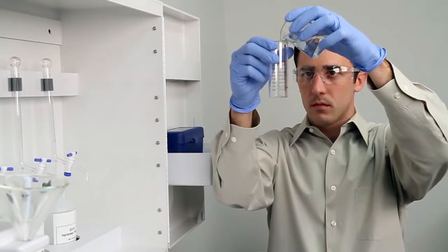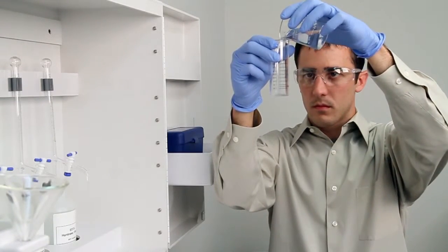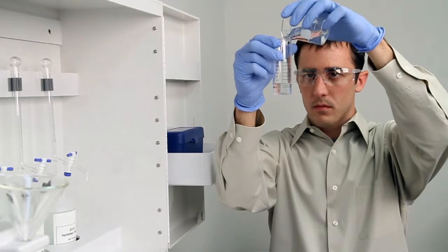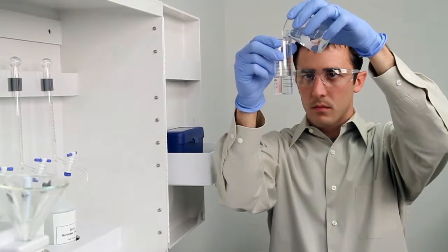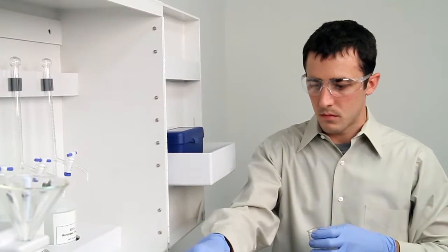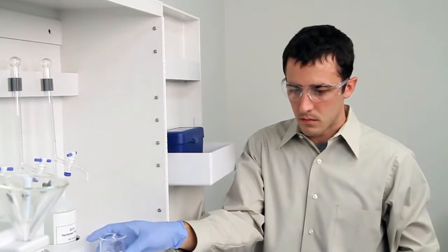To get an accurate sample, hold the vial close to eye level. Accuracy is very important during this step. Once you have an accurate sample, place the vial on a level surface and bend down to eye level to verify.